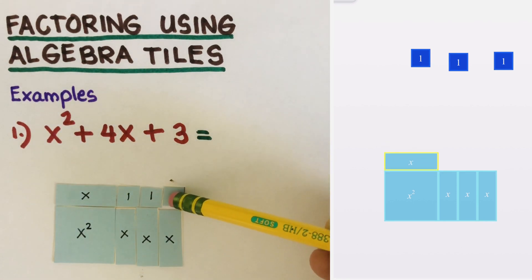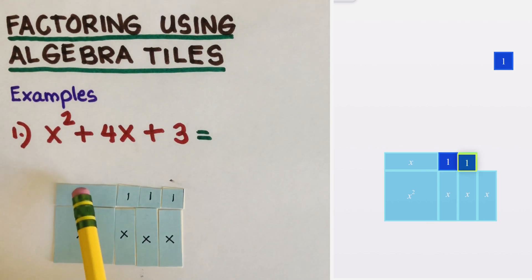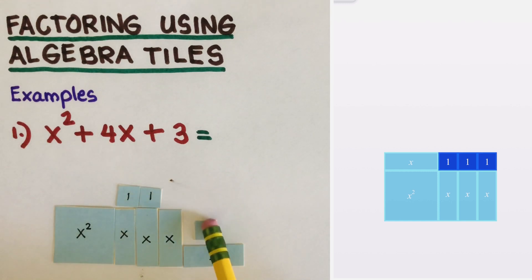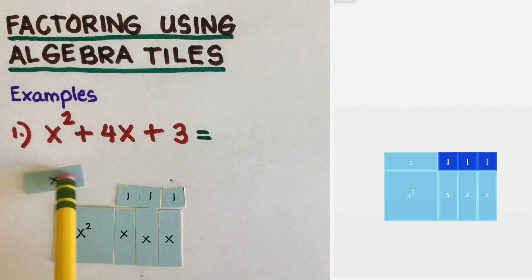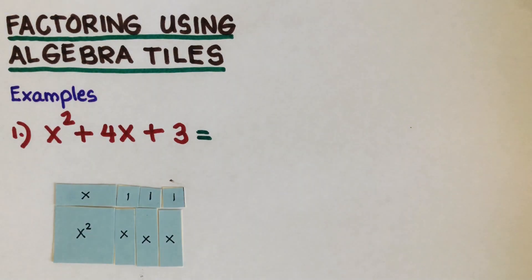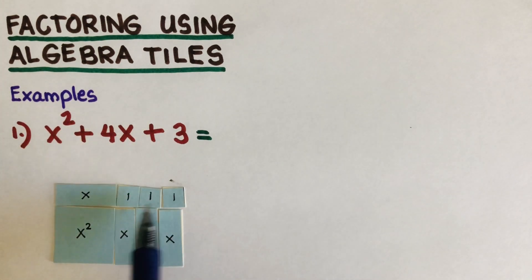So this is the rectangle right now. Other combinations may not work — for example, putting all three ones in a row leaves a gap and is not a good rectangle. This is the arrangement that we wanted. Using the area as a sum, we have x squared, four x's, and three.